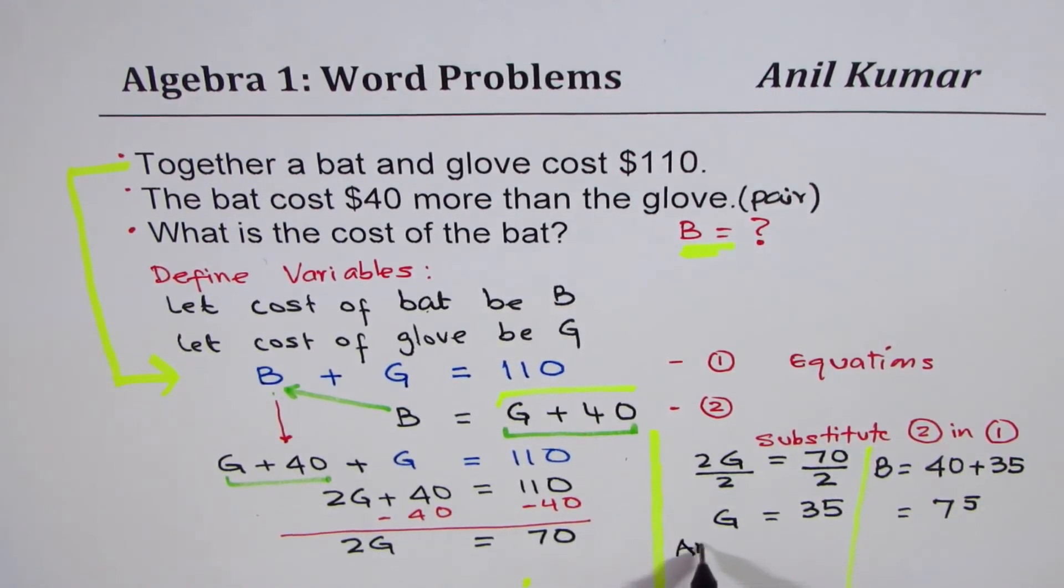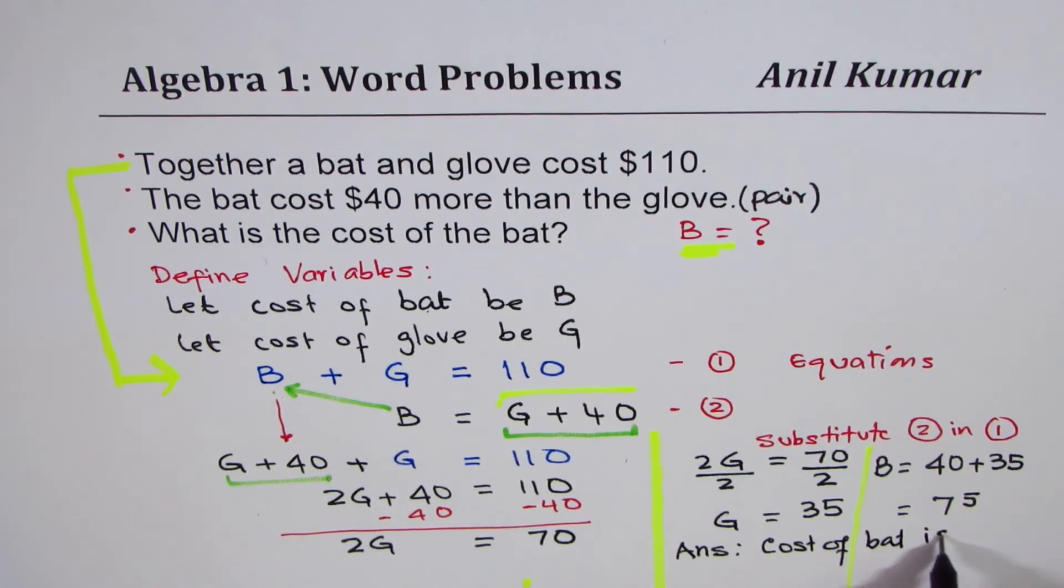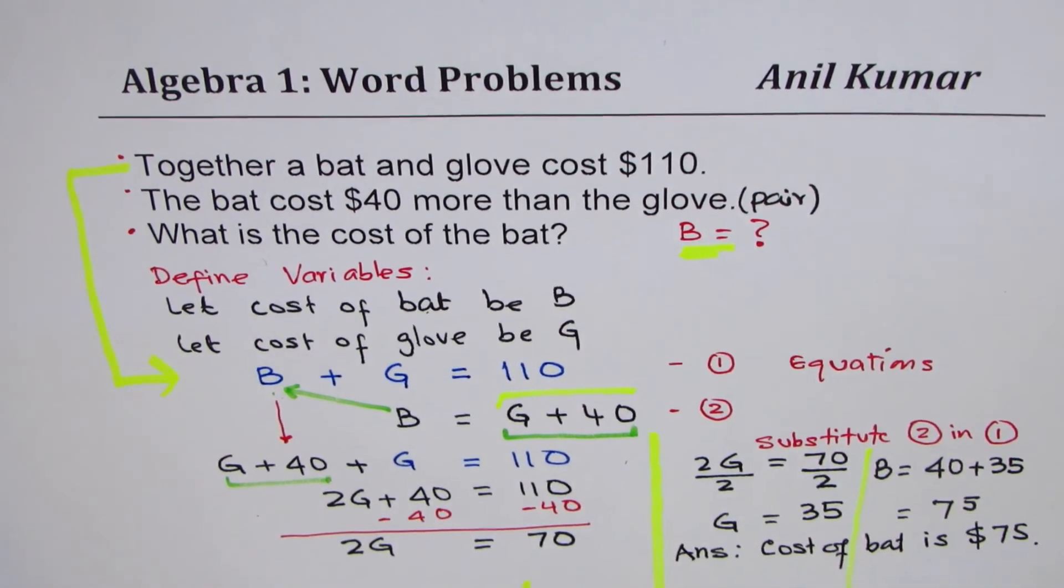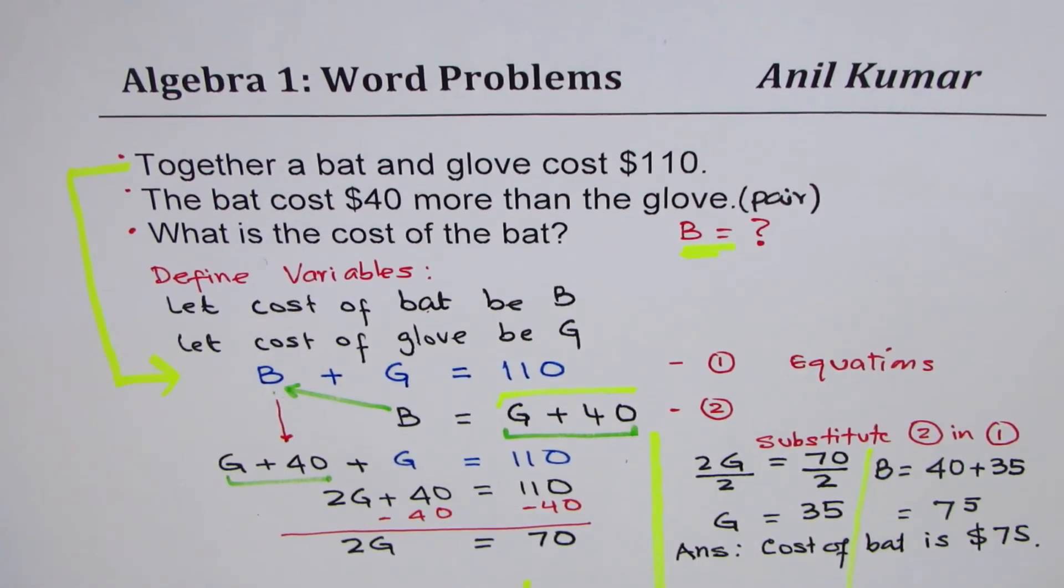So, now we can write down our answer. That is, cost of bat is $75. Does it make sense to you? So, that is how using algebra, we can answer such questions.